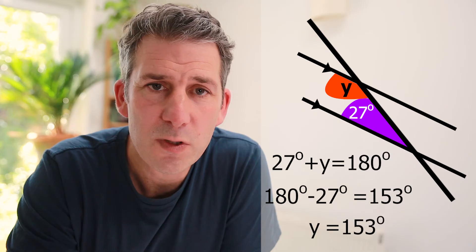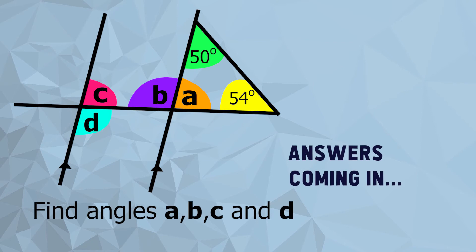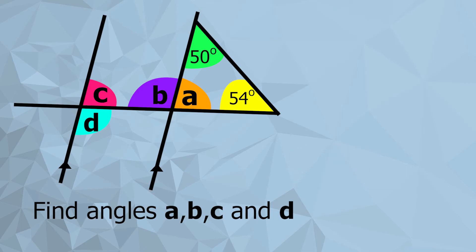We're very nearly done. We've seen all the rules and looked at examples for all of them, but to finish off I thought it'd be useful to look at some slightly harder questions that use all the same rules. This question looks more complicated than the others but it's not really — it's just using the same things we've learned. I notice the triangle, and those three angles add up to 180 degrees. So from that I can calculate angle A: 180 degrees take away the other two angles leaves me with 76 degrees. Angle A is 76 degrees.